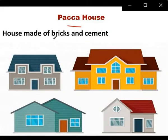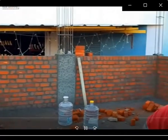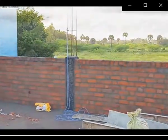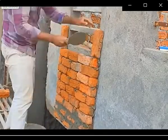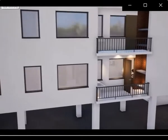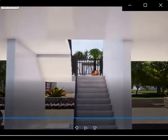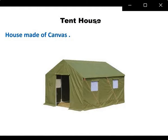Pakka house is made of bricks and cement. There is also a tent house which is made of canvas. These houses are things which are around us.